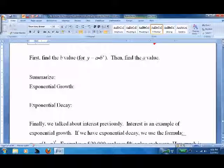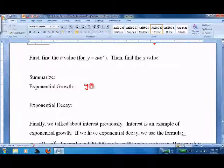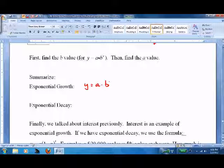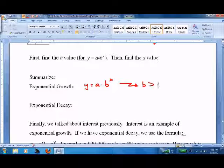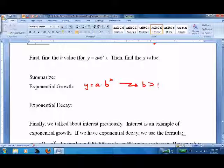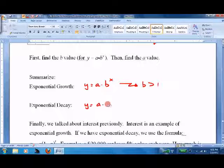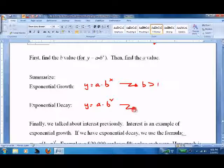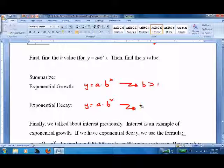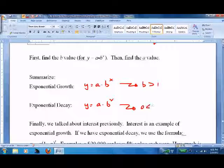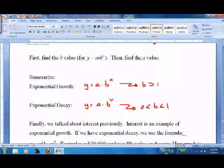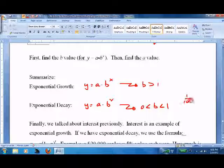Summary: Exponential growth is y equals a times b to the x where b is greater than one. Exponential decay is y equals a times b to the x where zero is less than b is less than one - so b is a fractional number between zero and one, like one tenth or two fifths.